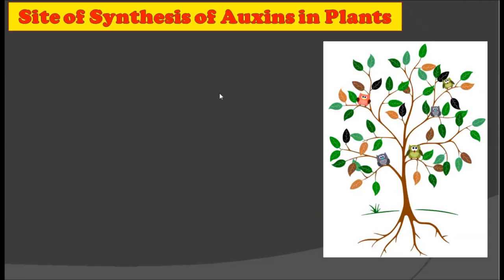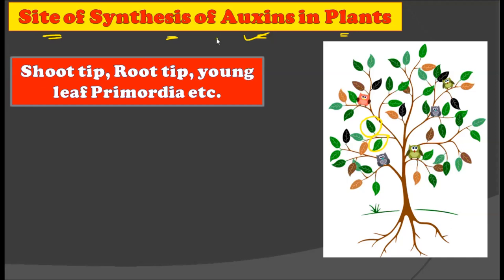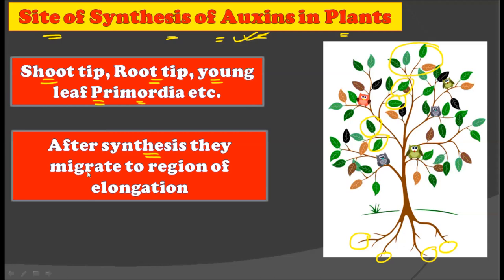Where is the site of synthesis of auxin in plants? The typical parts where auxins are synthesized are the shoot tips, root tips, and the young leaf primordia. After synthesis in these areas, they migrate to the region of elongation — wherever there is a process of elongation, the auxins are translocated there.